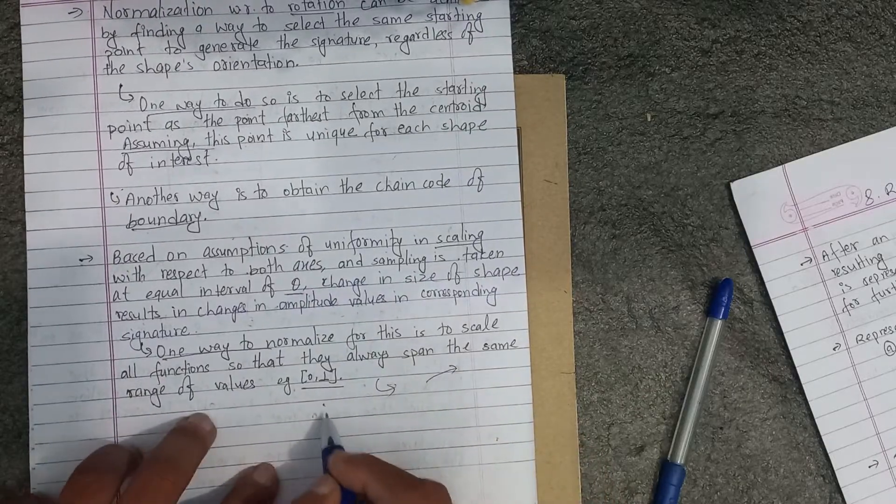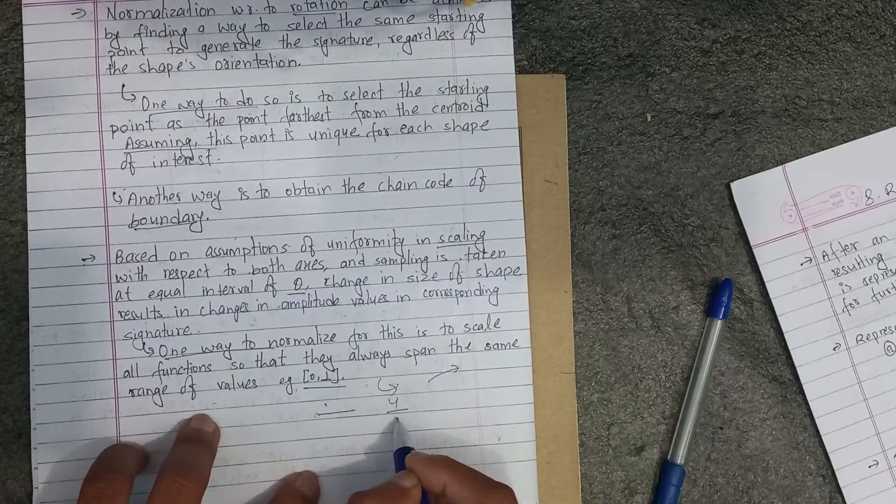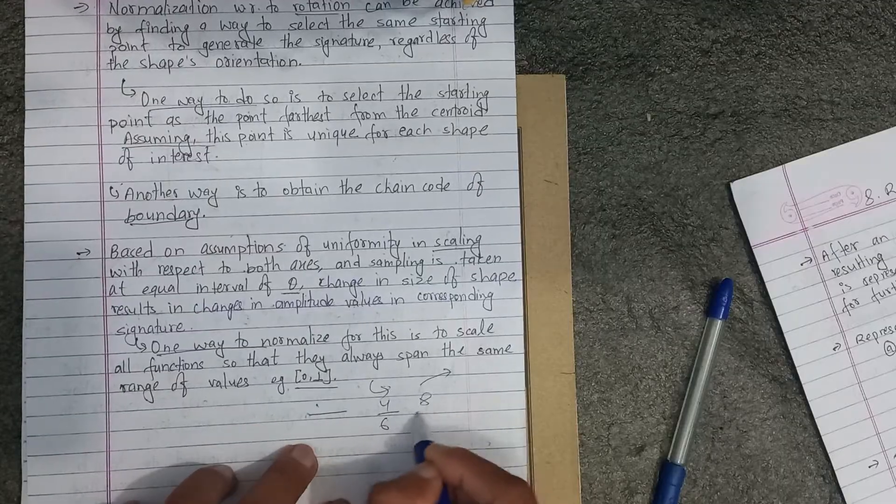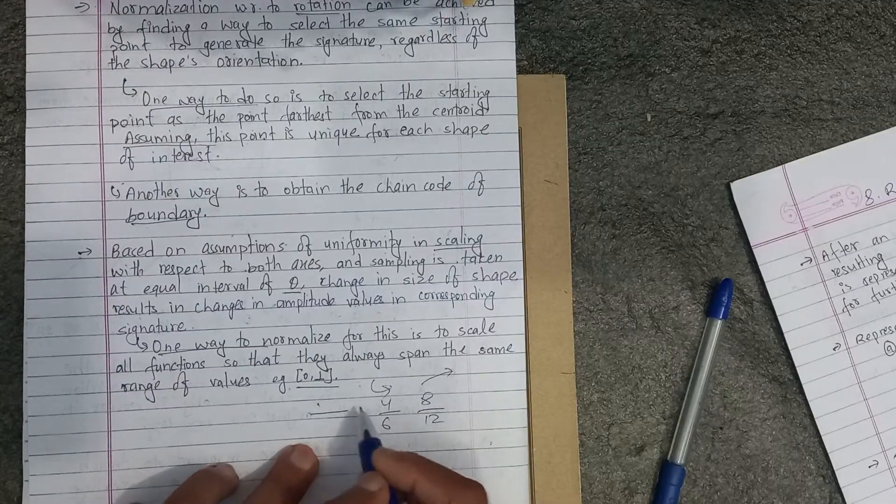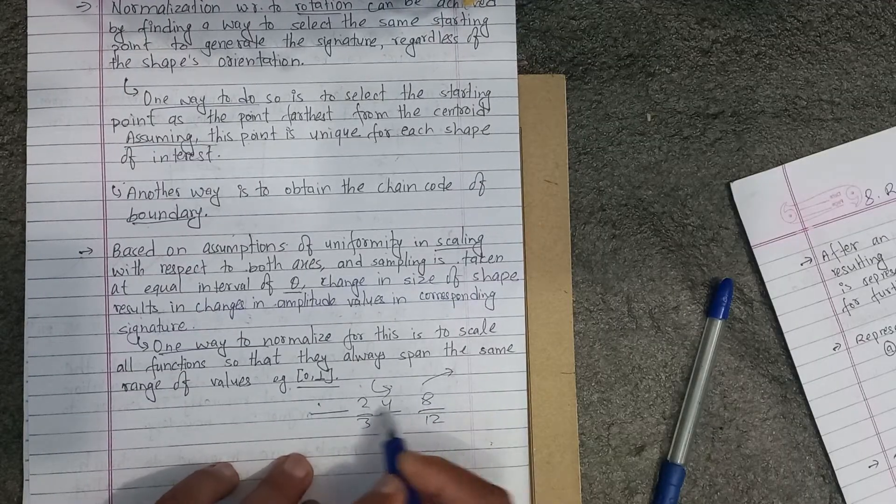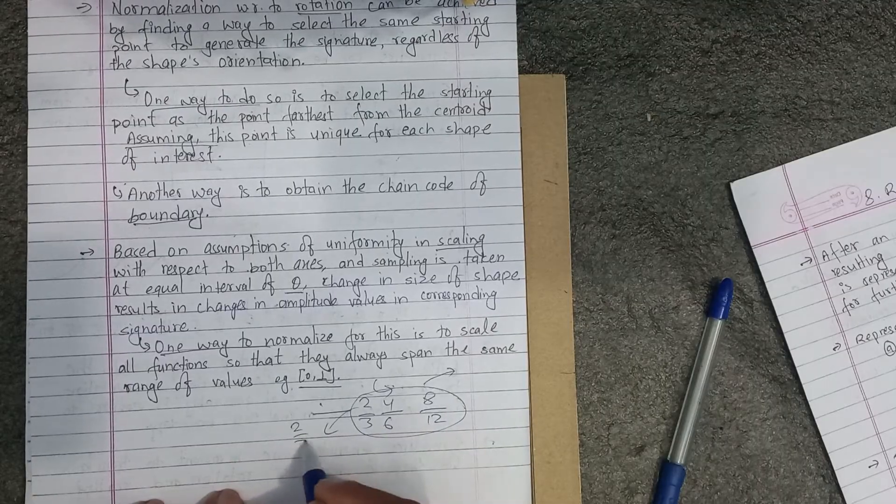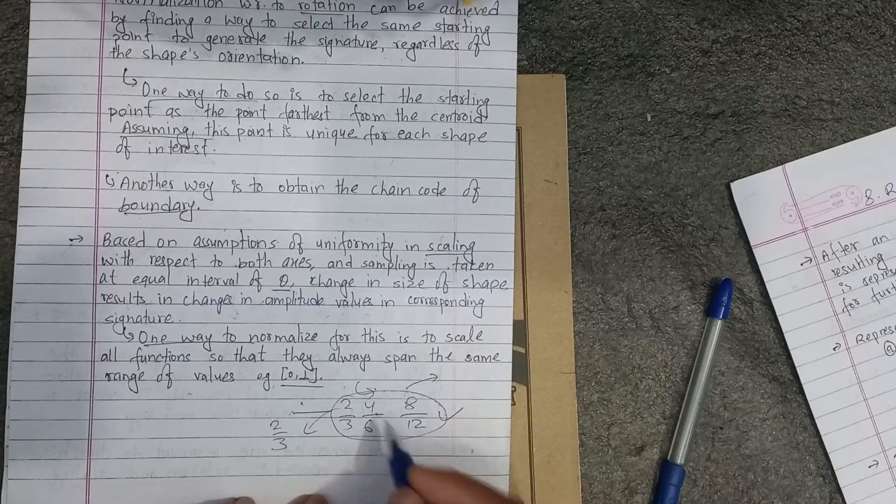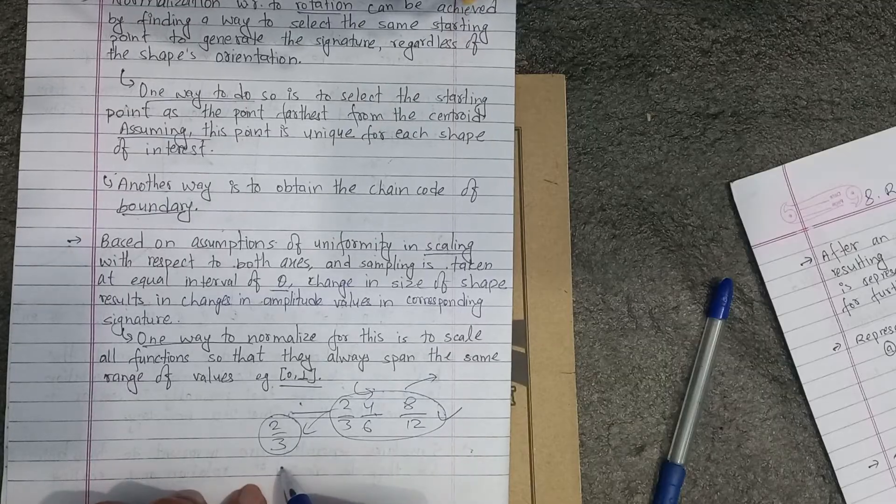The ratio is maintained, for example 4 by 6 to 8 by 12, or 2 by 3.